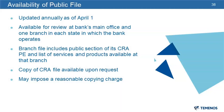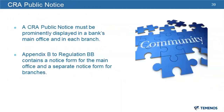There is a specific public notice required to be posted in the lobby of the main office as well as the branch offices. Appendix B to Regulation BB contains a notice form for the main office and a separate notice for the branches. Regulation BB is the Federal Reserve's regulation found at 12 CFR 228. You will need to ensure that you are looking at your specific regulator's site to ensure you are including the correct information. For example, OCC is referenced as 12 CFR 25, 12 CFR 195 pertains to Federal Savings Associations, and the FDIC's citation is 12 CFR 345.